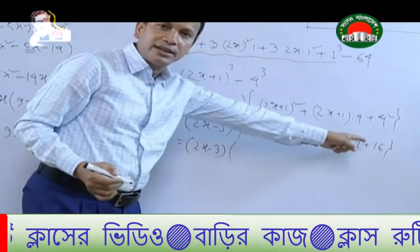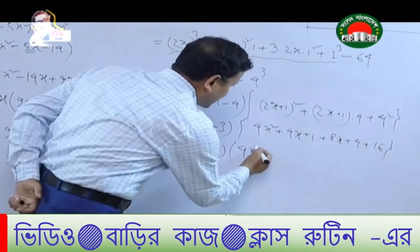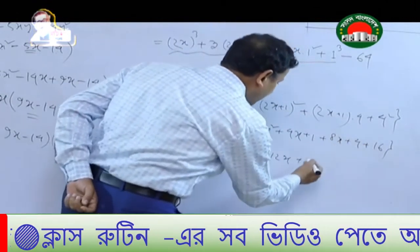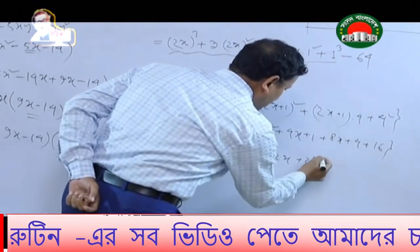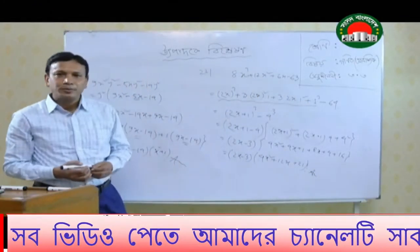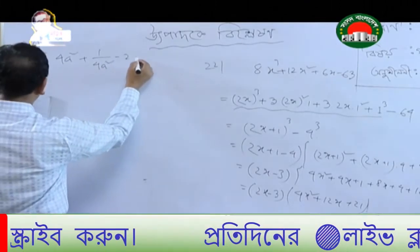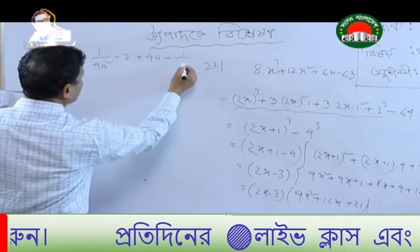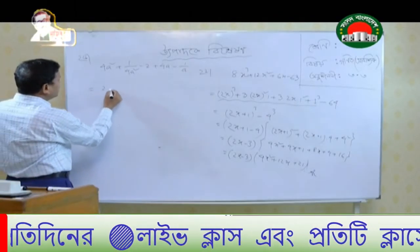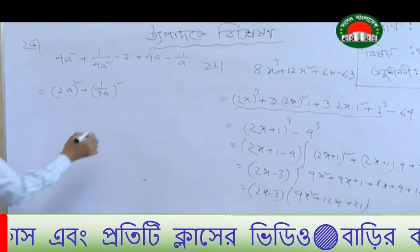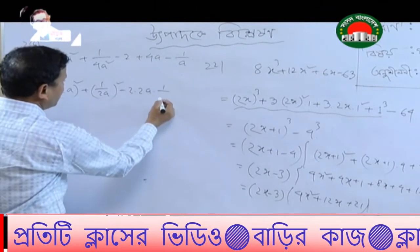Look, x squared is 1. So 4x squared is 4x squared plus 2x plus 1. Now let's get out of here. 4a squared, 1 by 4a squared minus 2 plus 4a minus 1 by a. 2a squared plus 1 by 2a squared minus 2ab.